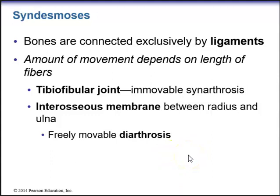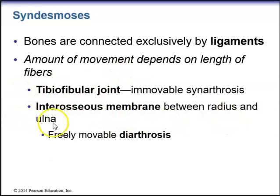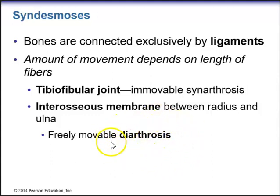Syndesmoses are joints where bones are connected exclusively by ligaments, and the amount of movement depends on the length of the fibers. The tibial-fibular joint between the tibia and fibula is an immovable synarthroses type. The interosseous membrane between the radius and ulna is freely movable, classified as diarthroses. While all synovial joints are diarthroses, not all diarthroses are synovial joints — the interosseous membrane is one example.